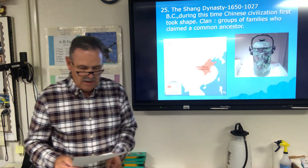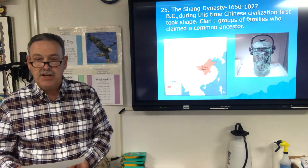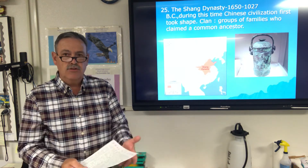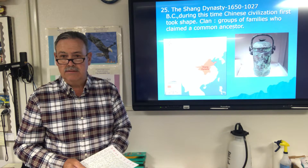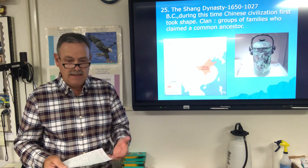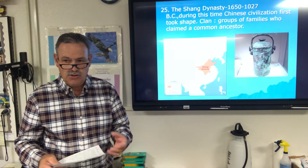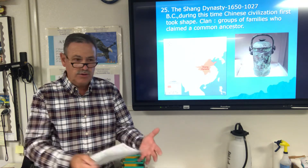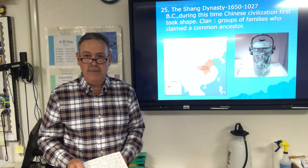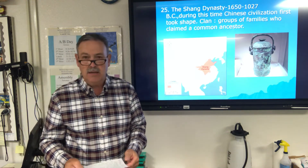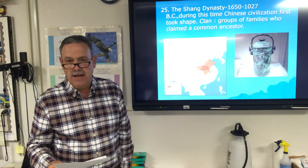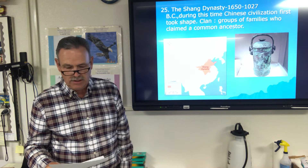We start with the Shang dynasty. One thing that led to the formation of these dynasties was the need for a strong central government to control the rivers — they had to have organization to make these projects work. The Shang dynasty dates are 1750 to 1045 BC in the newer textbook; the older book was about 100 years shorter than that.